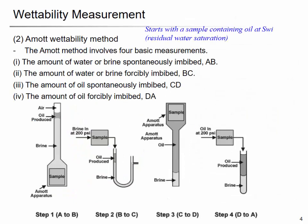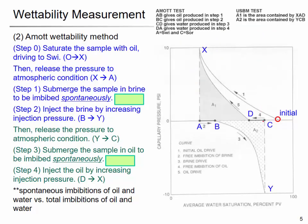You start with the rock sample containing oil at the initial water saturation or residual water saturation. You have a rock sample which is saturated by water initially, and you inject the oil with pressure, displacing the water inside. As the capillary pressure increases, the water saturation decreases.